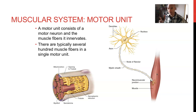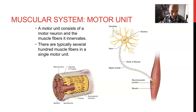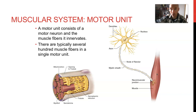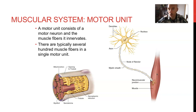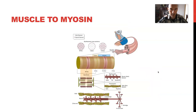Large motor units might innervate thousands or tens of thousands of muscle fibers, so their force production ability is much larger. For example, the muscles in your eye carry out very fine, small movements, so their motor units are very small. On the other hand, the muscles in your hips and legs are large and primarily produce force and movement, so larger motor units are found there. A muscle is comprised of many motor units — hundreds or thousands depending on muscle size.